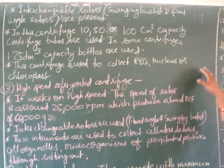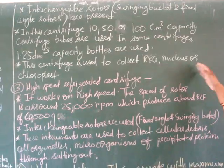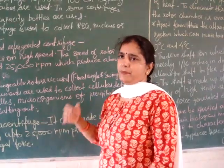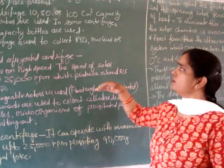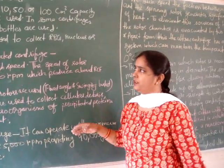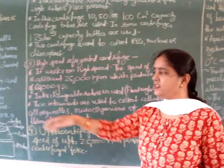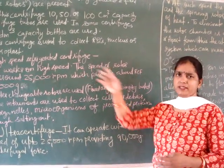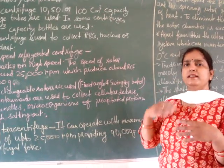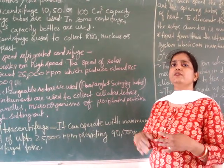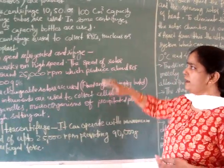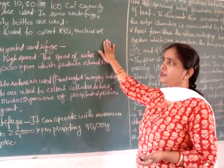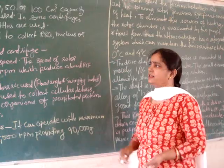In this centrifuge, 10, 50, or 100 cubic centimeter capacity centrifuge tubes are used. In some centrifuges, high capacity bottles are also used for centrifugation — that is why the name is large capacity refrigerated centrifuge. The speed is the same as small bench centrifuge, but it is refrigerated and can centrifuge large volumes. It is used to collect RBCs, nuclei, or chloroplasts.